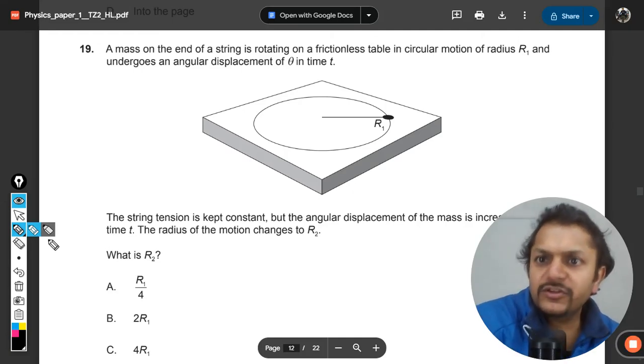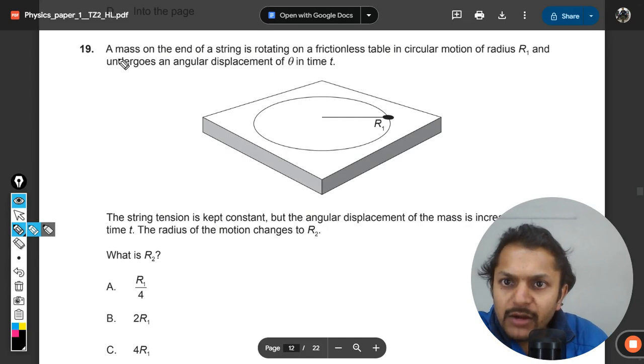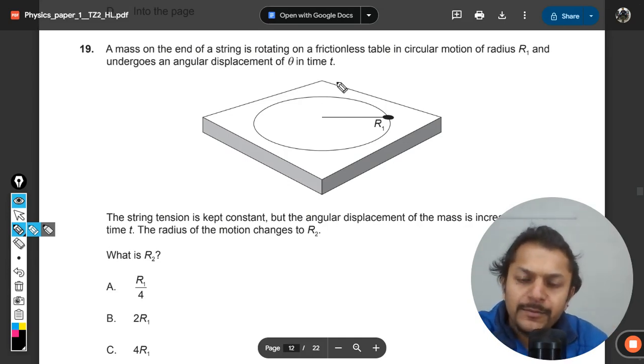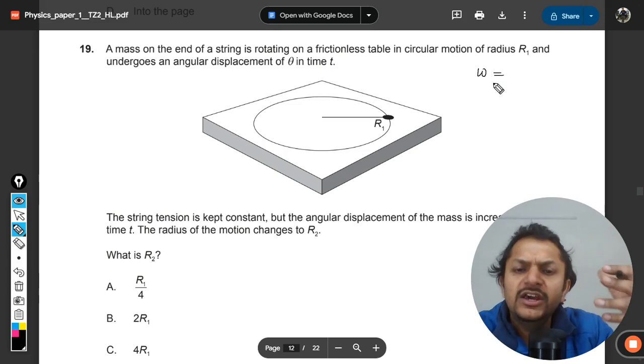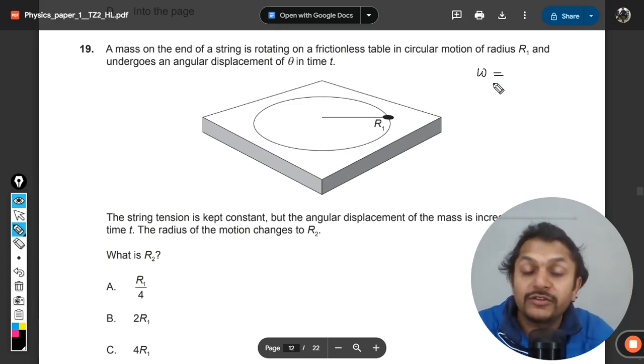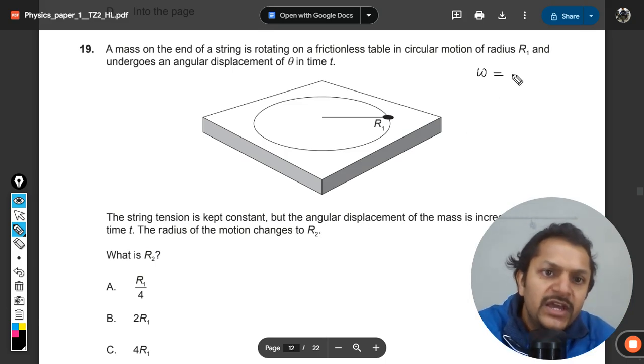Okay, dear students, let us see what is there in this question. A mass on the end of a string is rotating on a frictionless table in circular motion of radius r1 and undergoes an angular displacement of theta in time t. It means they literally want to talk about the angular velocity, but they do not want to say that the angular velocity is omega.